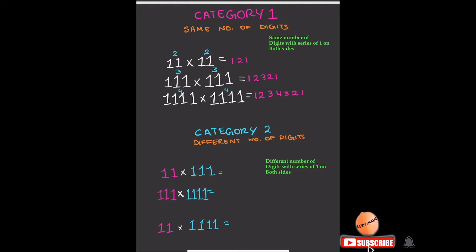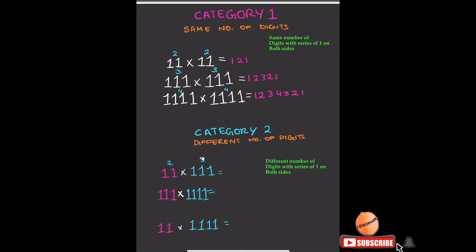In category two, we have a different number of digits on each number. Here we've got two digits on the first number and three digits on the second. We pick the lower digit count, which is 2, so we increase from 1 to 2 — that's 1, 2. Then we find the difference between 3 and 2, which is 1. Because the difference is 1, we repeat the last digit once more, writing another 2. Then we decrease back to 1.